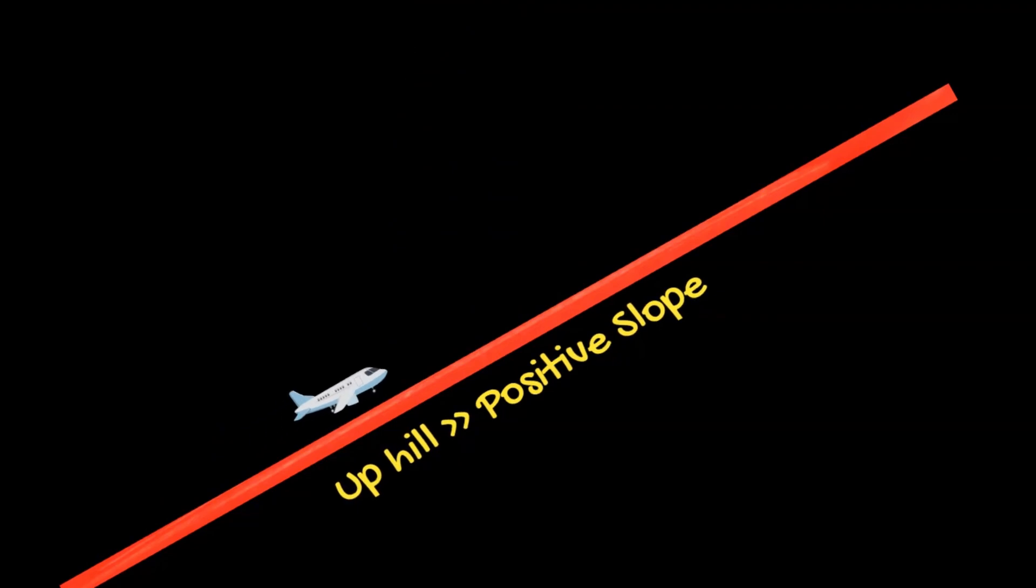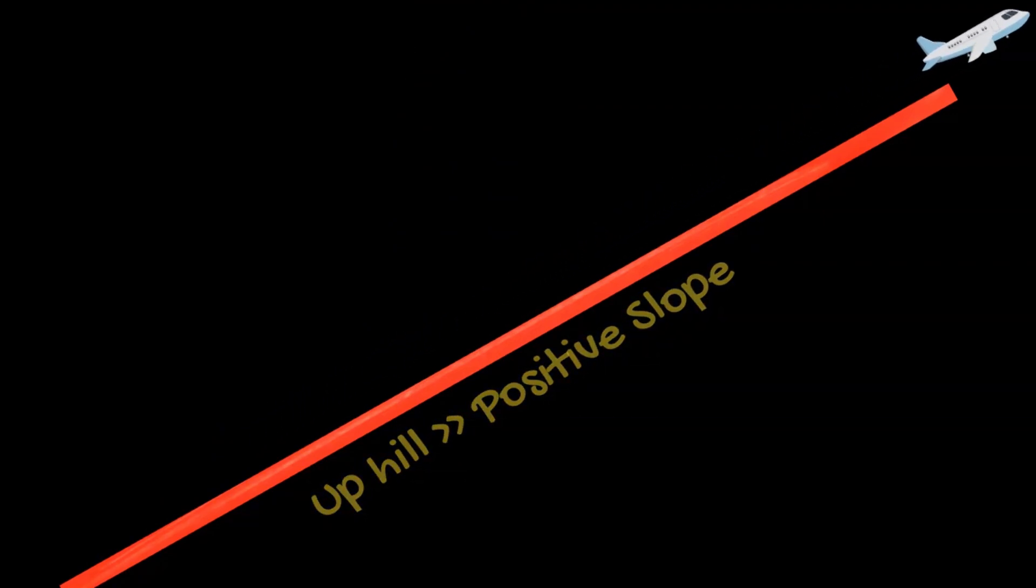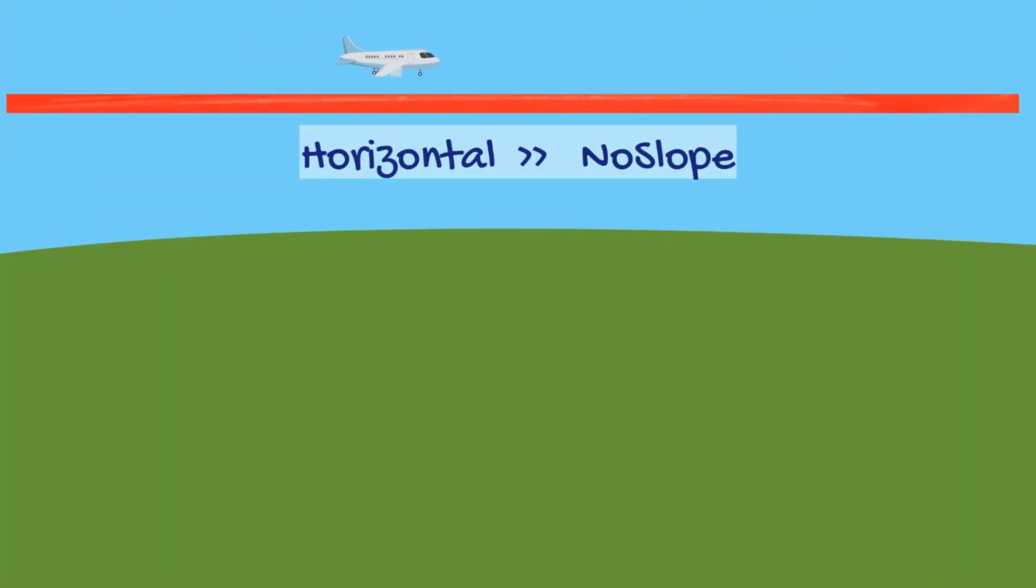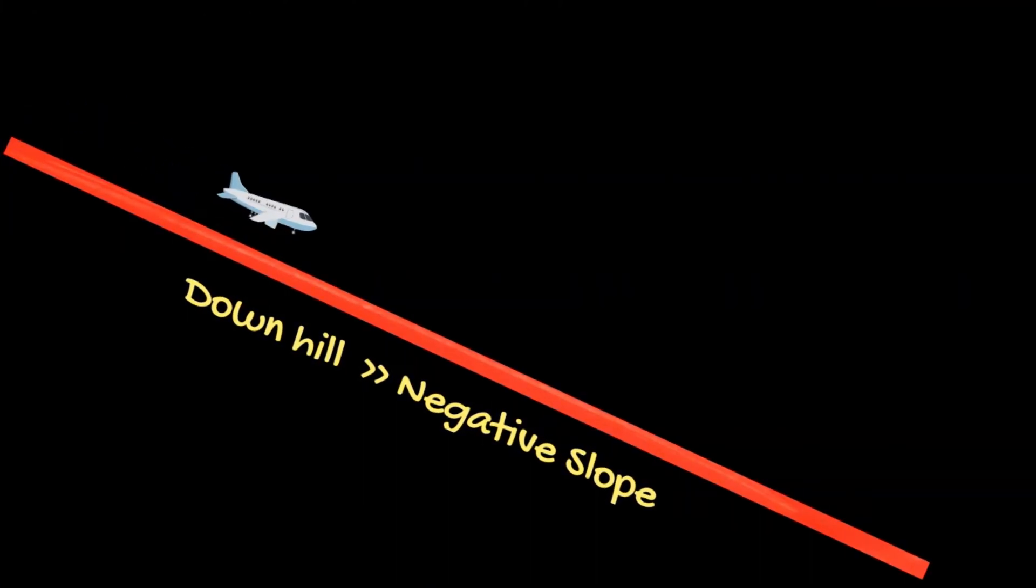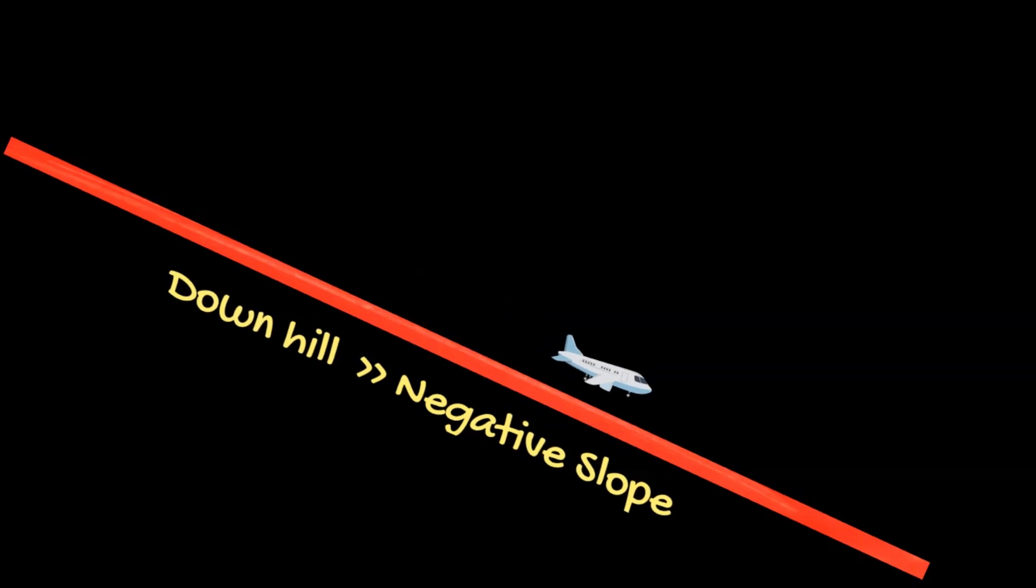The uphill of the given line gives you the positive slope, whereas the horizontal line gives you no slope of the line. And finally, the downhill gives you the negative slope of the given line.